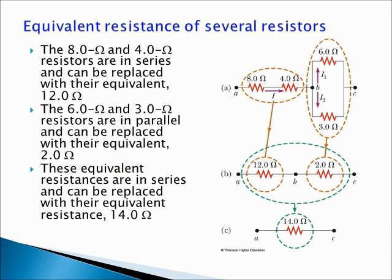If you have a circuit with parts connected only in series or in parallel, the equivalent resistance can be found by repeatedly applying these rules. In the circuit shown, the resistors of 8 and 4 ohms are connected in series, so they can be replaced by an equivalent resistance of 12 ohms. The 6 and 3 ohm resistors are connected in parallel, and we replace them by an equivalent resistance of 2 ohms by adding the reciprocals. Finally, the new resistances of 12 and 2 ohms are in series, giving 14 ohms — the equivalent resistance of the whole circuit.